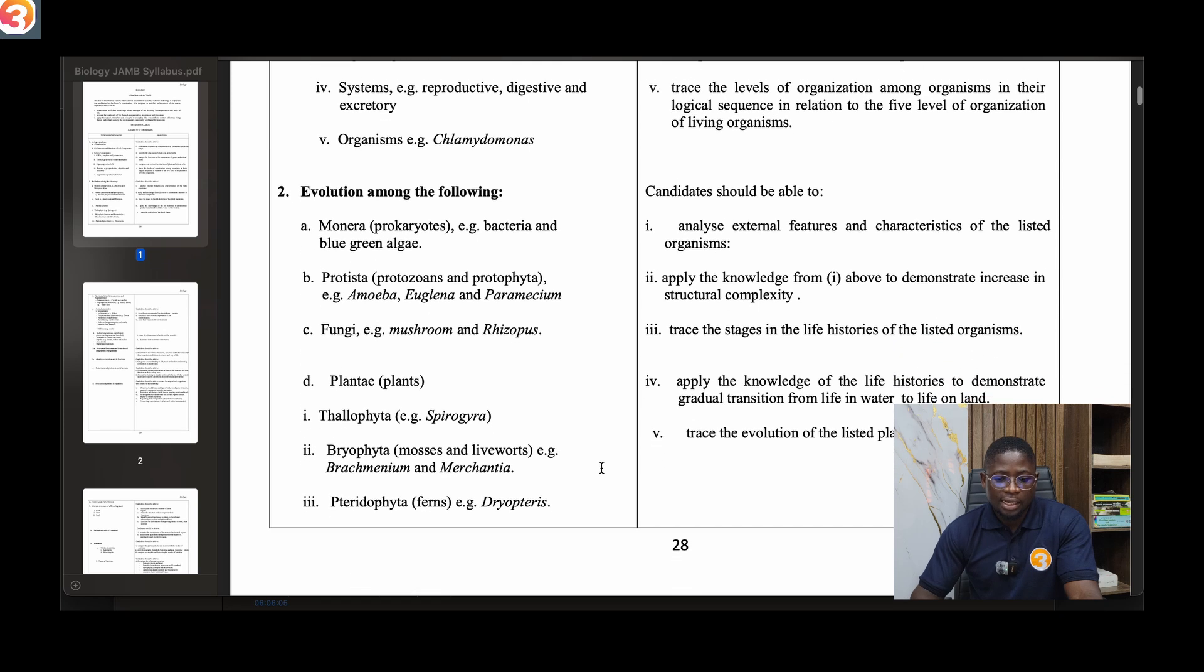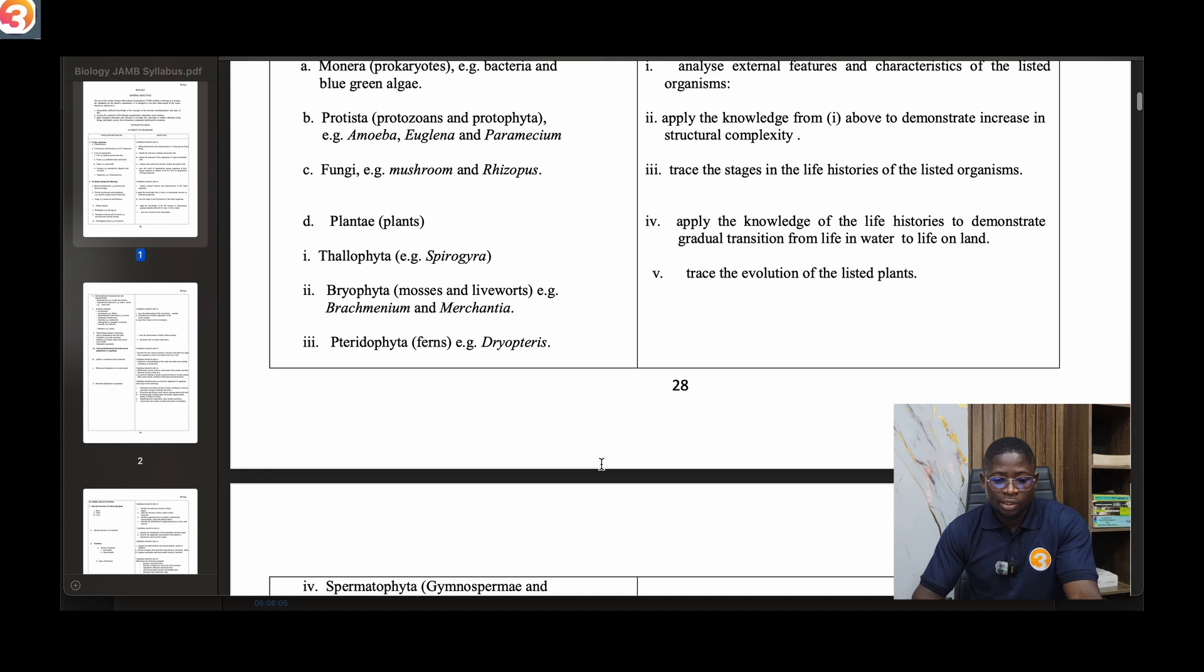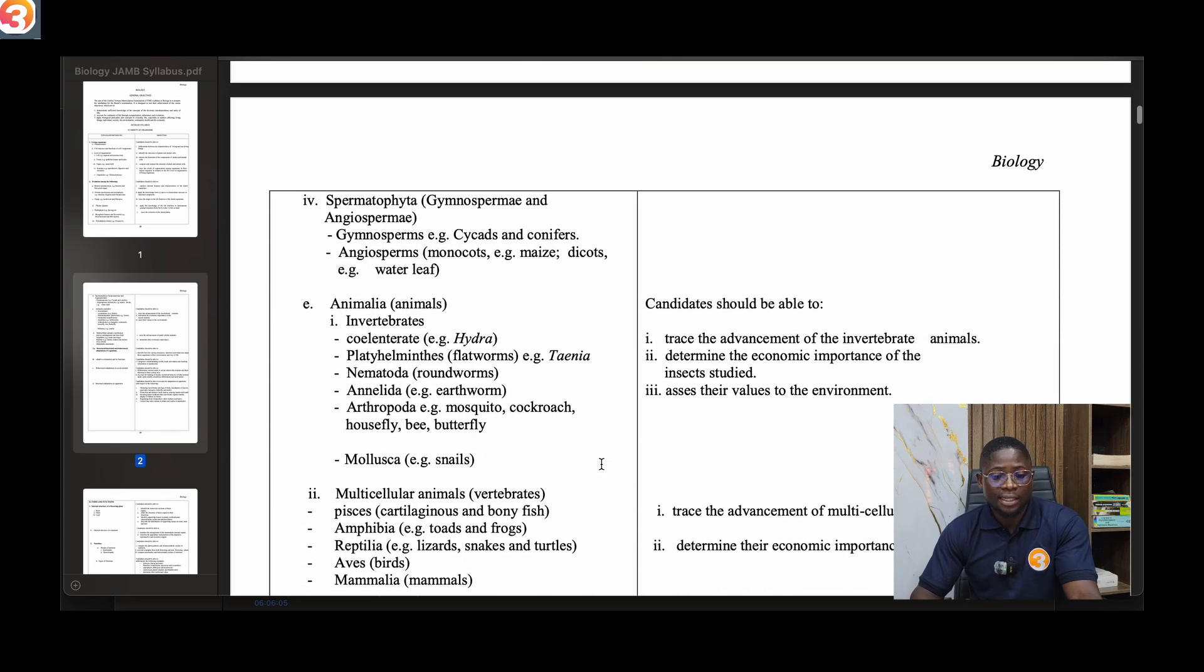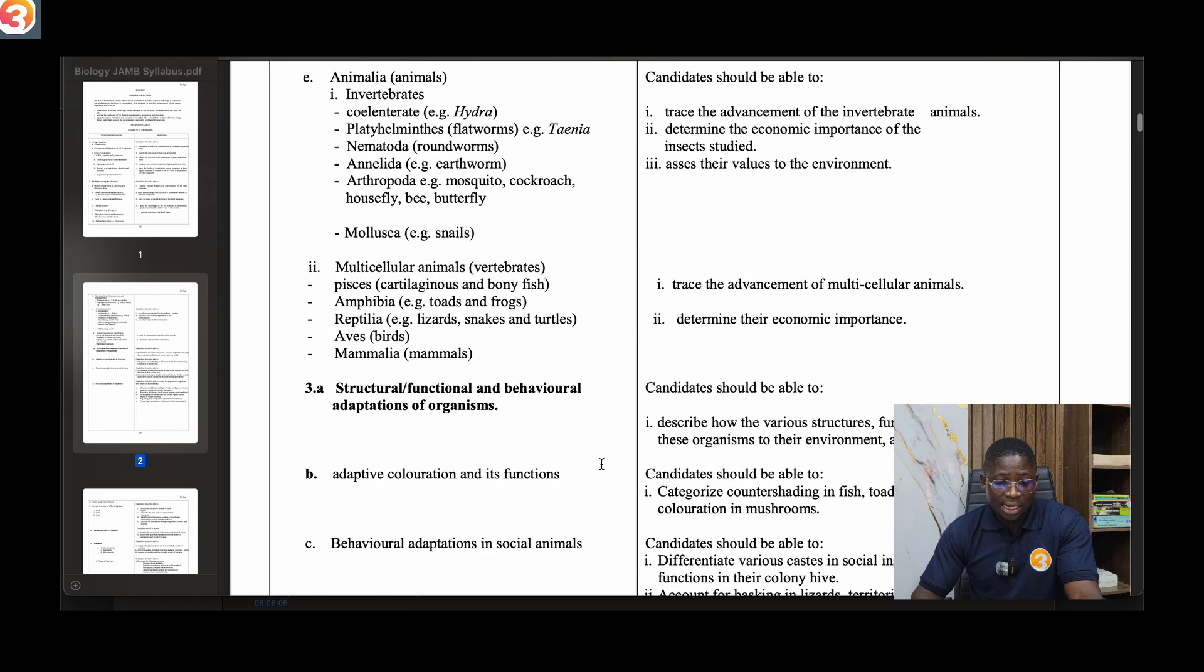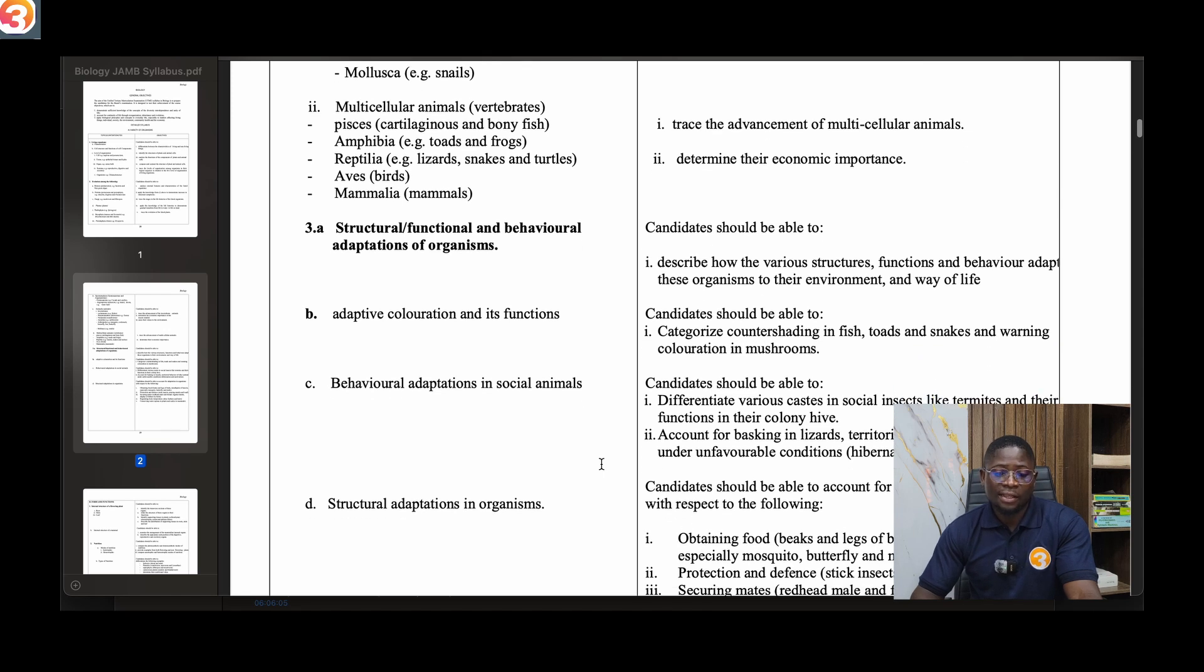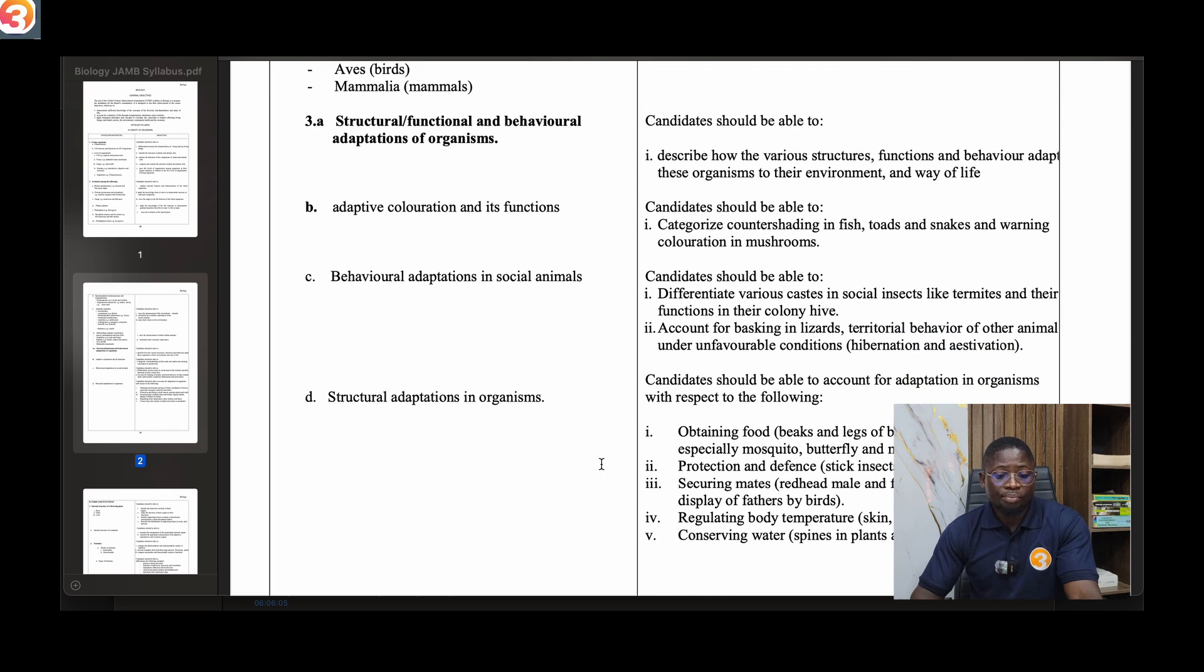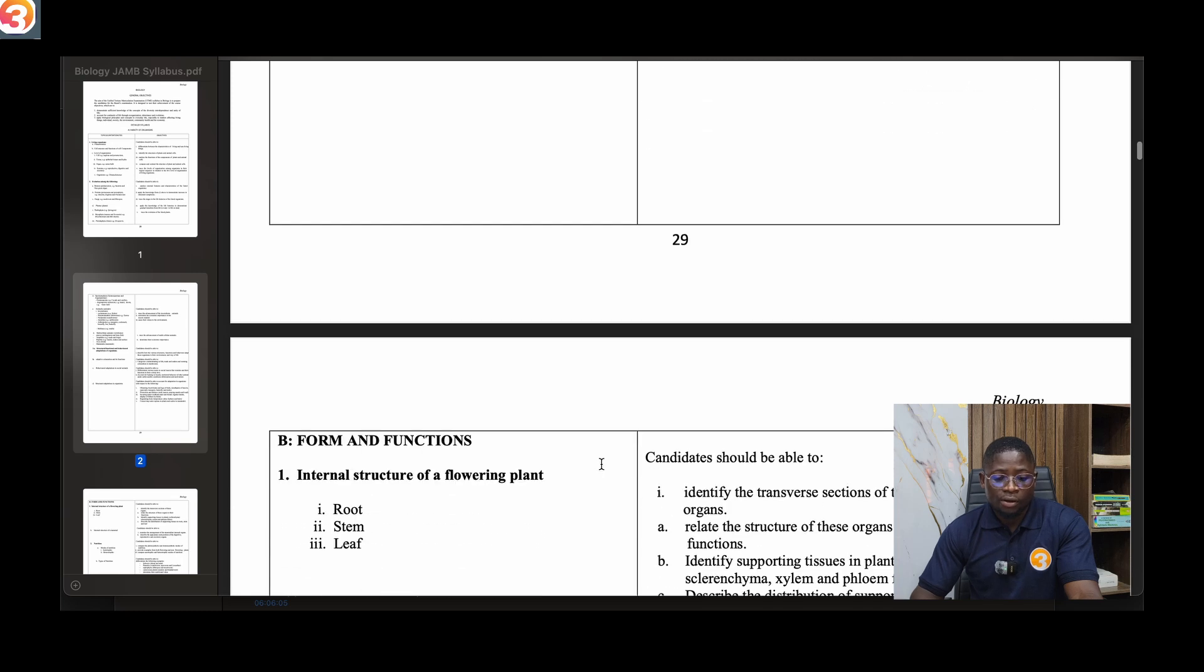Under the plant, we've got to talk about the thallophyta, bryophyta, pteridophyta, spermatophyta, and then a part about Animalia - talk about multicellular animals. The third topic is structural and functional and behavioral adaptations of organisms. You'll talk about adaptive coloration and its functions, behavioral adaptations in social animals, and structural adaptations in organisms.